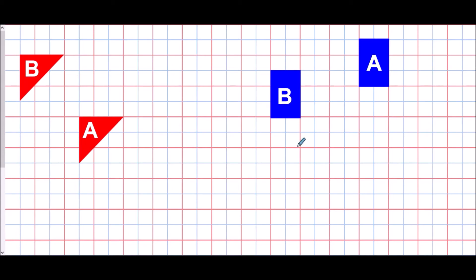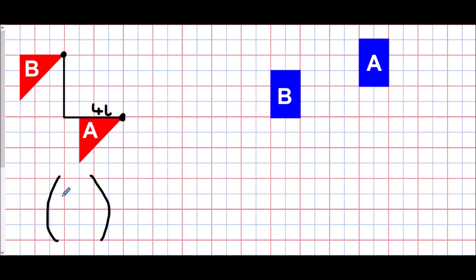Looking at the next two diagrams, we use exactly the same idea — a point on each shape, going from A to B. Starting at the top right-hand corner of A, I go four to the left and then four up. Because that is four left, I need to show it's going left rather than right, so on a set of axes going left is negative — negative four. It's going four up so that is a positive movement. Negative four, four means four left and four up.